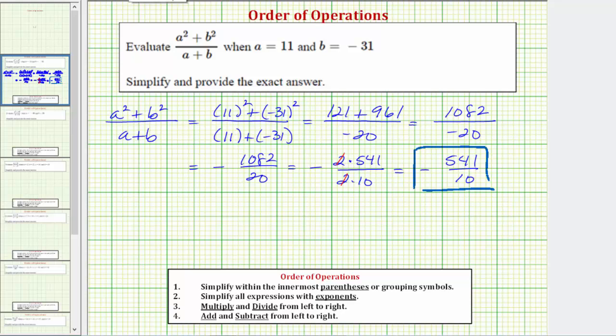Again in this case, we can also express the exact value as negative 54.1. What we don't want to do on these problems though, is convert to a decimal and then round. By rounding, we're not giving the exact value as the directions indicate.